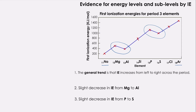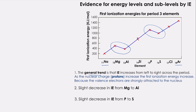We can justify this general trend by speaking about the nuclear charge, which is the effect of the positively charged nucleus on the last shell electrons. As the nuclear charge increases, the first ionization energy increases because the valence electrons are strongly attracted by the nucleus — more protons, so more attraction between the positively charged nucleus and the last shell electrons, which we can call valence electrons.